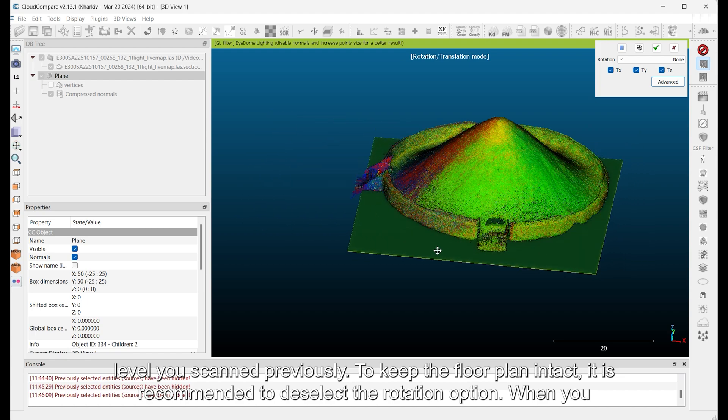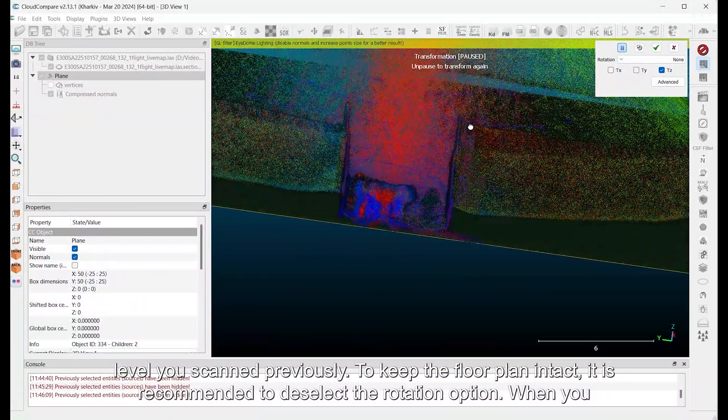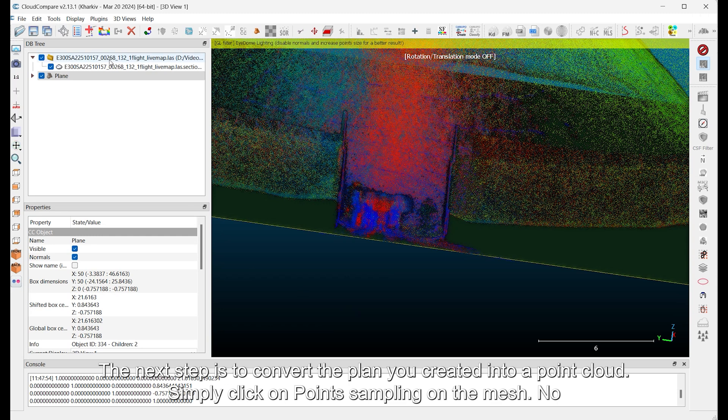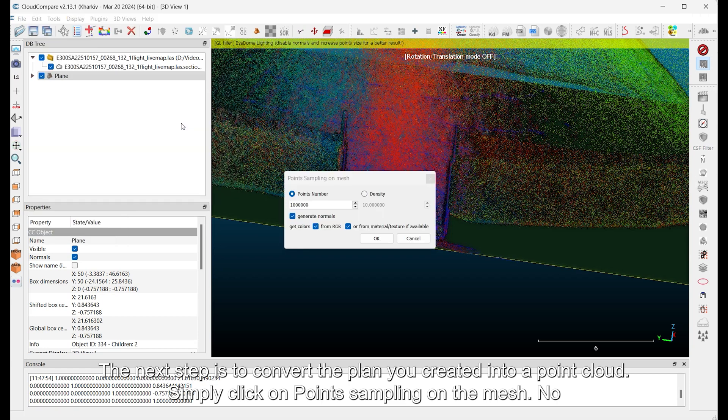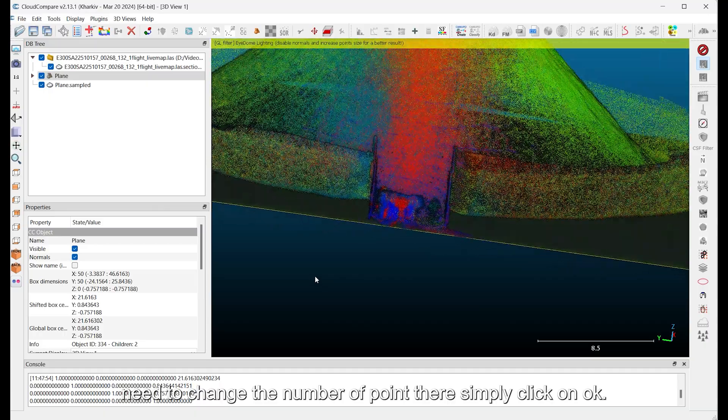To keep the floor plan intact, it is recommended to deselect the rotation option. When you are satisfied, click the green logo. The next step is to convert the plan you created into a point cloud. Simply click on Point Sampling on the mesh. No need to change the number of points there, simply click on OK.